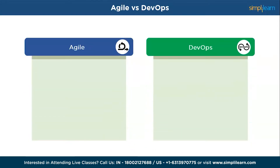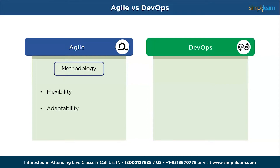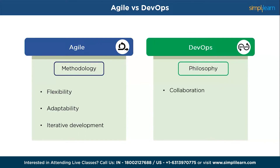Agile and DevOps are two distinct approaches in software development, each with its own focus and objectives. In terms of methodology, Agile is a software development methodology that emphasizes flexibility, adaptability, and iterative development. Whereas DevOps is a cultural and operational philosophy emphasizing collaboration and integration between development and operations teams.